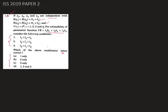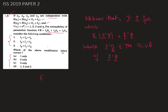So let's start. We know that there must exist a vector c such that the expectation of c-prime y equals l-prime theta, where c-prime y is the best linear unbiased estimator of the parametric function l-prime theta. Now here we have four y's, so c-prime y can be written as c1*y1 plus c2*y2 plus c3*y3 plus c4*y4.